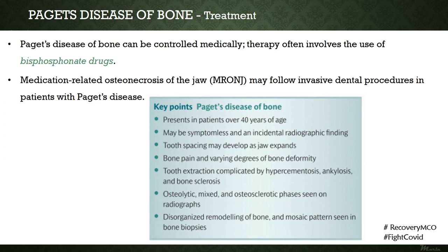To summarize: Paget's disease of bone occurs in the older age group, may initially be symptomless and identified incidentally, and results in spacing of the teeth and bone pain with varying degrees of deformity. Complications include hypercementosis, ankylosis, and bone sclerosis. The pathology is associated with three phases — osteolytic, mixed, and osteosclerotic — and there is disorganized remodeling of bone resulting in a mosaic or jigsaw puzzle pattern in bone biopsies.